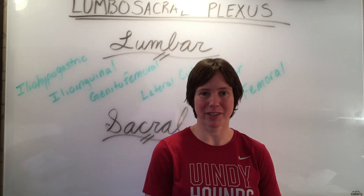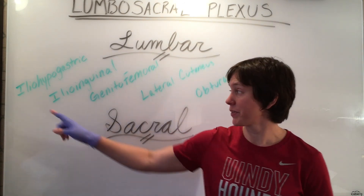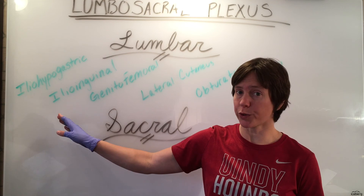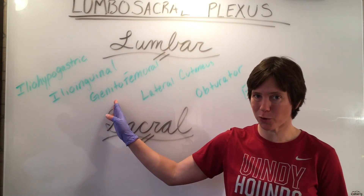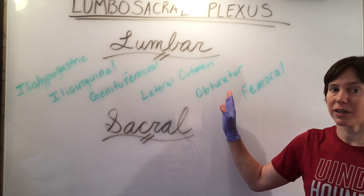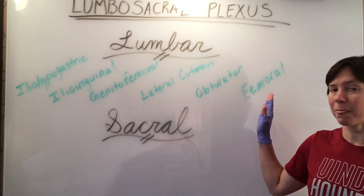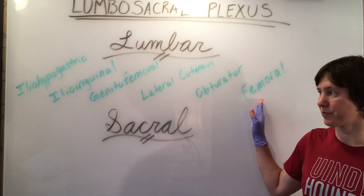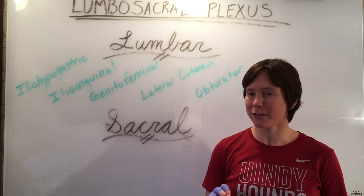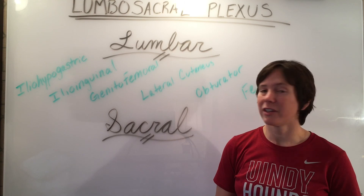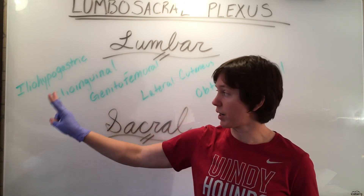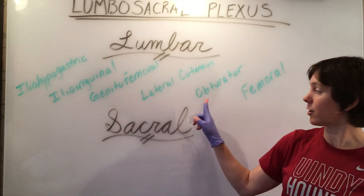The major nerves of the lumbar plexus consist of the following: iliohypogastric, ilioinguinal, genitofemoral, lateral cutaneous, obturator nerve, and the femoral nerve. There's a fun mnemonic you can use to remember them in this order: 'I twice get laid on Fridays.'